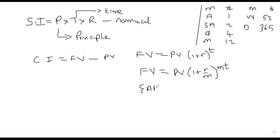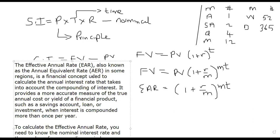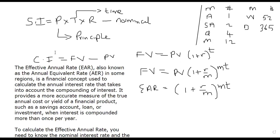There's also what we call the effective annual interest rate, given by (1 + R/M)^M minus 1. The effective annual rate is the most accurate rate that measures the cost or interest or yield on an investment. It is the annual equivalent rate — a financial concept used to calculate the annual interest that takes into account compounding. It provides a more accurate measure of the true cost or yield of a financial product like savings, loan, or investment compounded more than once a year.